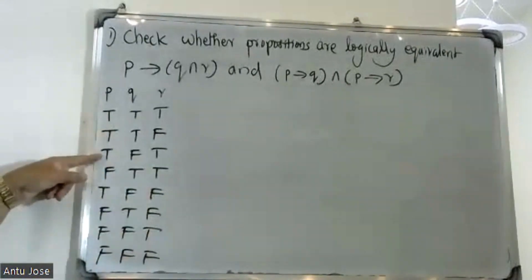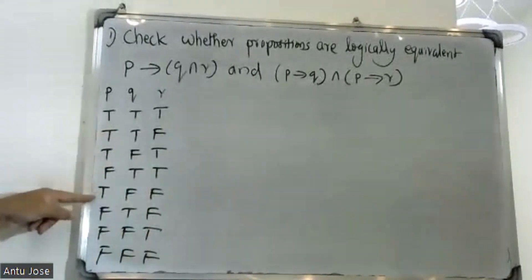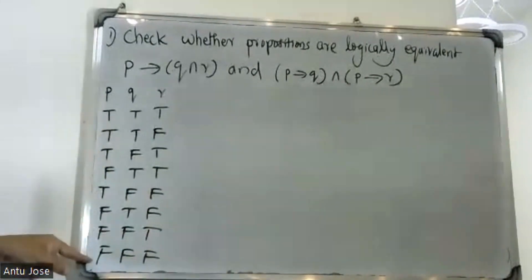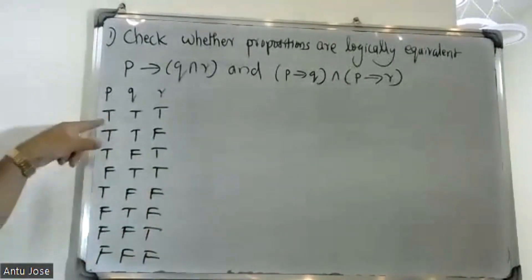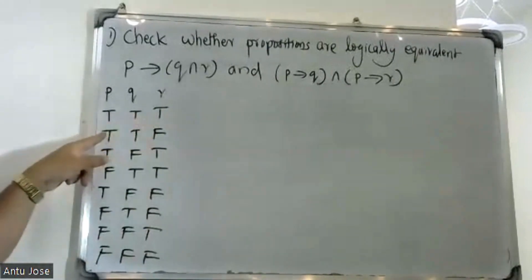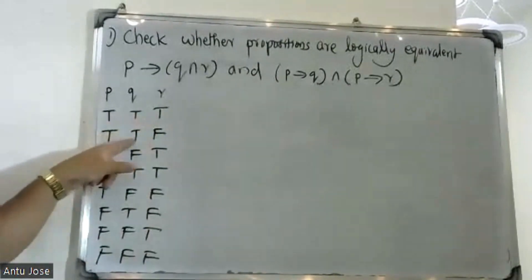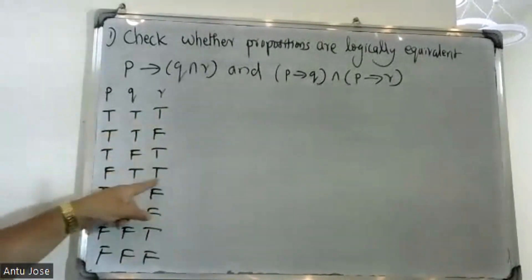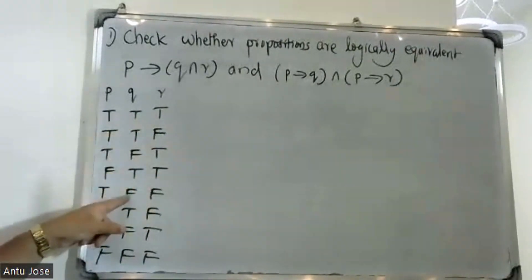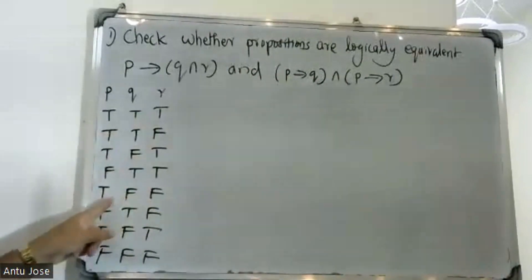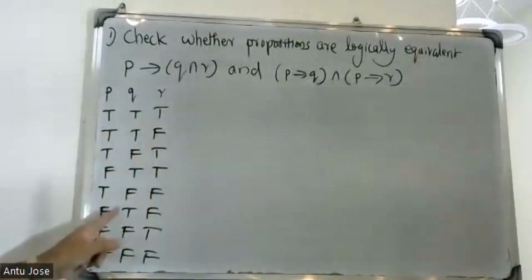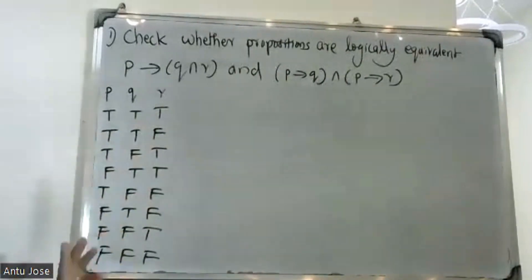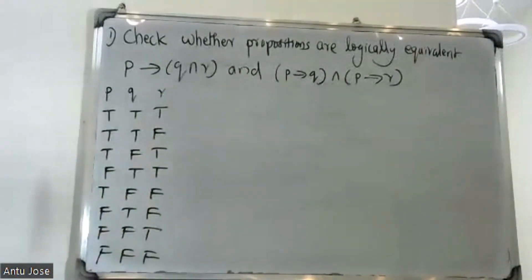That gives us eight rows total: one, two, three, four, five, six, seven, eight.